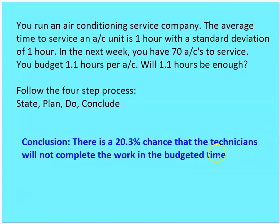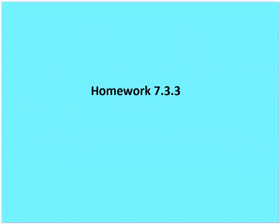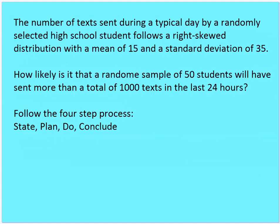The conclusion is there's a 20.3% chance that the technicians will not complete the work in the budgeted time. For homework 7.3.3: the number of texts sent during a typical day by a randomly selected high school student follows a right-skewed distribution — which is a clue that it's not normal — with a mean of 15 and a standard deviation of 35. How likely is it that a random sample of 50 students will have sent more than a total of 1,000 texts in the last 24 hours? Follow the four-step state-plan-do-conclude process.